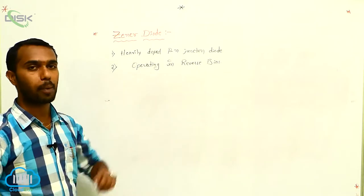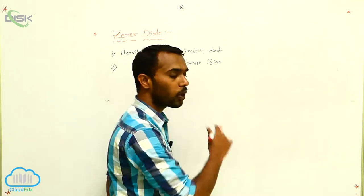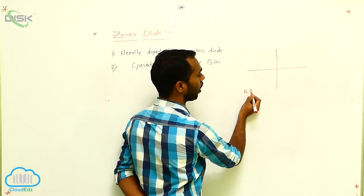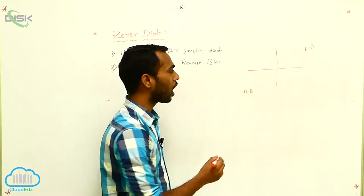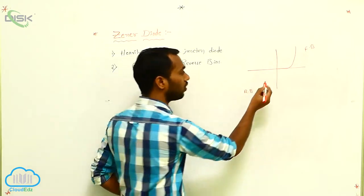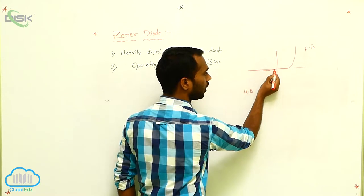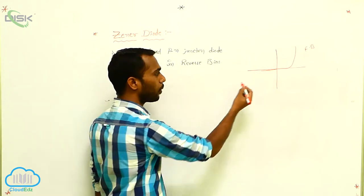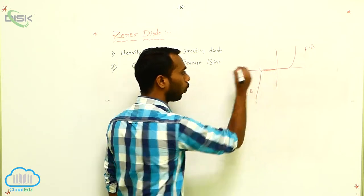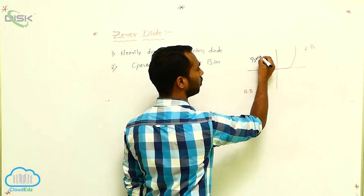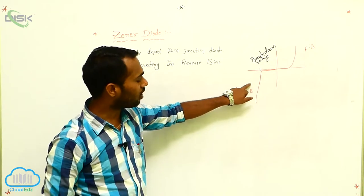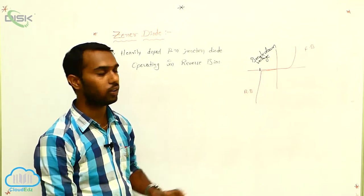If we operate in reverse bias, what happens? We have to check — we go back to p-n junction diode characteristics discussed in our last class. In forward bias, current increases; depletion layer width increases. But in reverse bias, current slowly increases. At a particular voltage, current suddenly increases — this voltage is called the breakdown voltage. We already discussed this using the Avalanche breakdown concept and Zener breakdown concept.